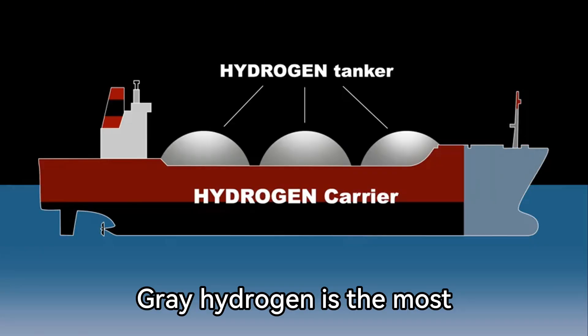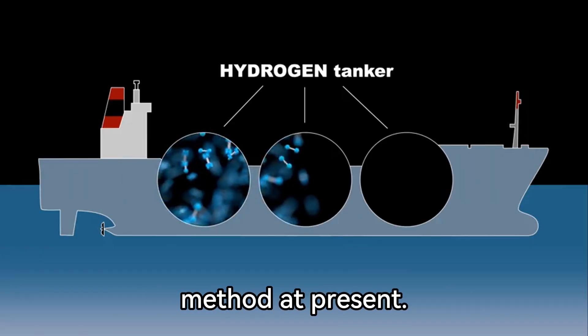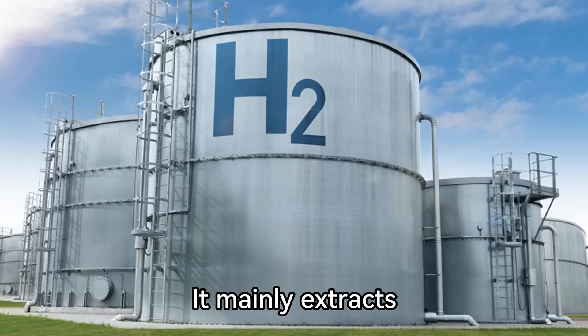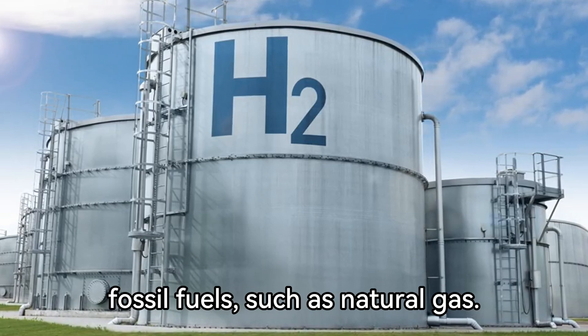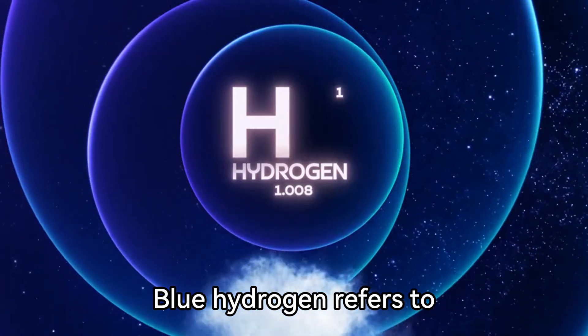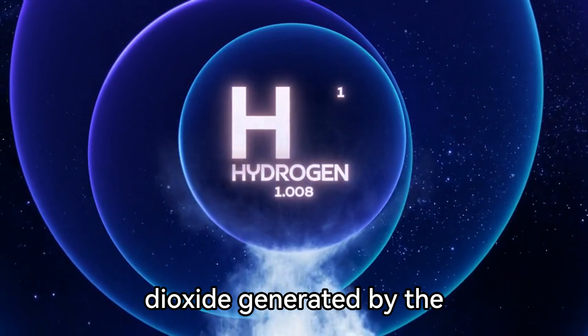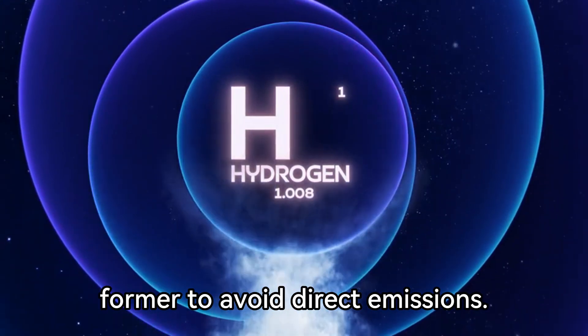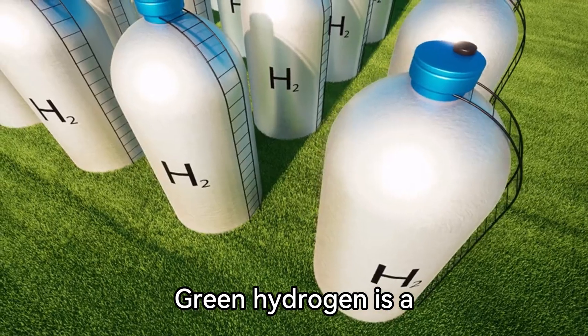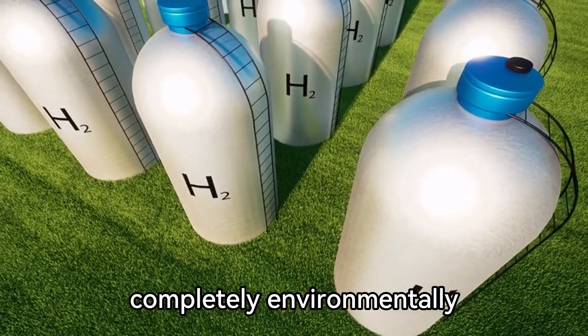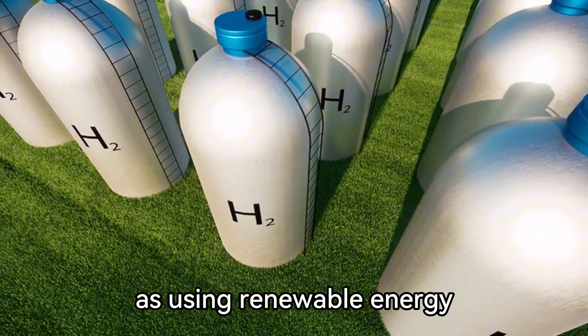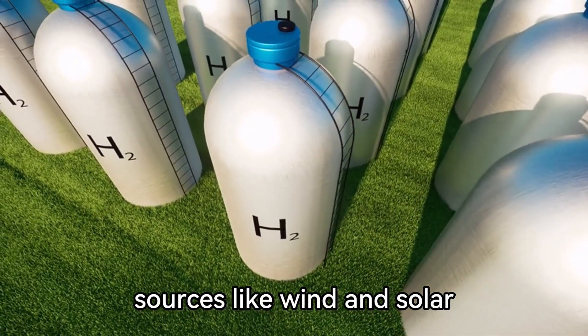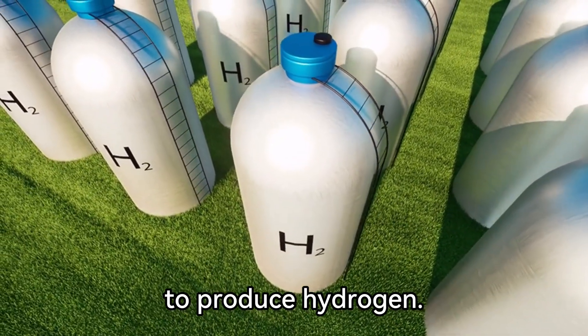Grey hydrogen is the most common hydrogen production method at present. It mainly extracts hydrogen through the reforming reaction of fossil fuels, such as natural gas. Blue hydrogen refers to collecting the carbon dioxide generated by the former to avoid direct emissions. Green hydrogen is a completely environmentally friendly hydrogen production technology, such as using renewable energy sources like wind and solar power to electrolyze water to produce hydrogen.